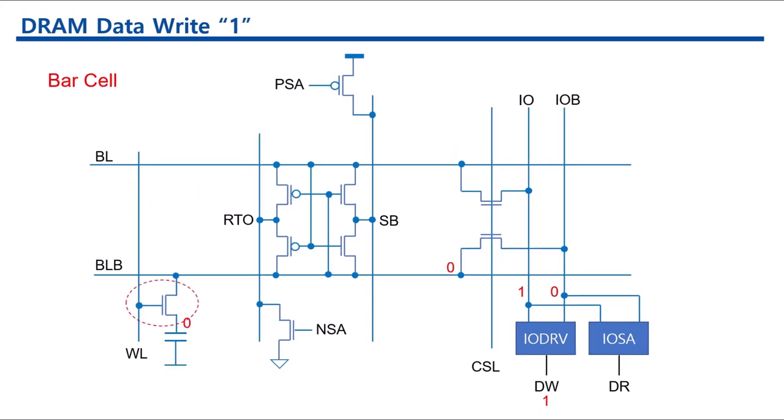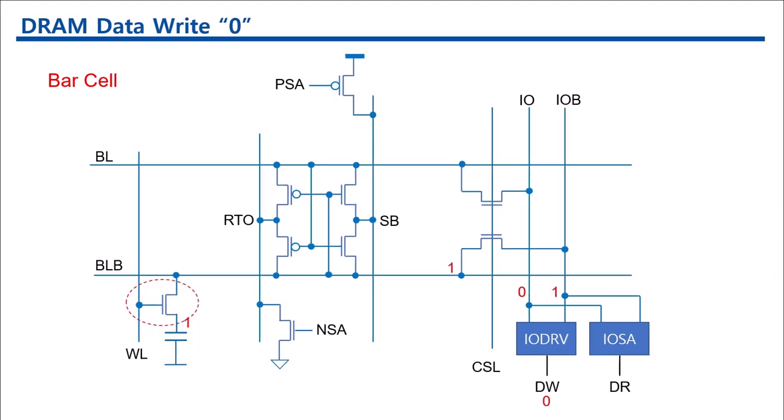In case of the complementary cell, when DW is 1, the I-O is 1 and the I-O bar is 0. Because the cell is connected with I-O bar, the cell data is 0. If DW is 0, the cell data becomes 1.